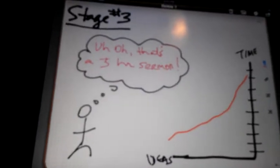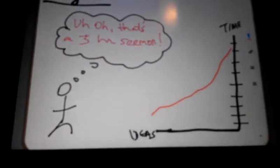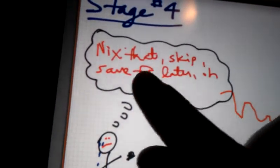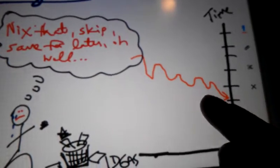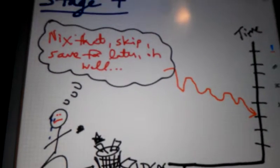And that's a problem because I'm white and I can't get away with that, which inevitably leads to the painful process of stage four. This is when tears are shed and things are thrown away. As you nix that, skip this, save this for later, and go, oh well. And the ideas get trimmed back down to the world of normalcy.